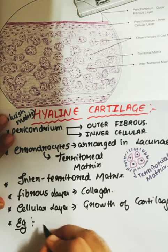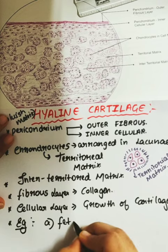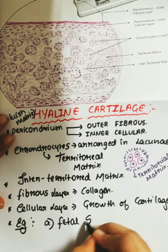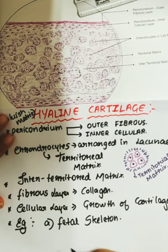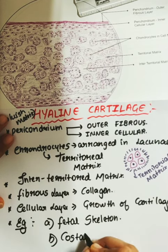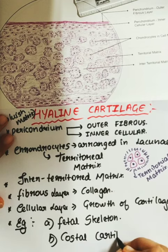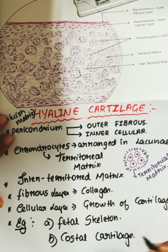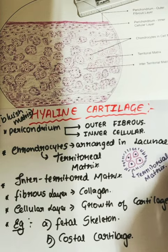Hyaline cartilage is found in fetal skeletal tissue and also in costal cartilage.